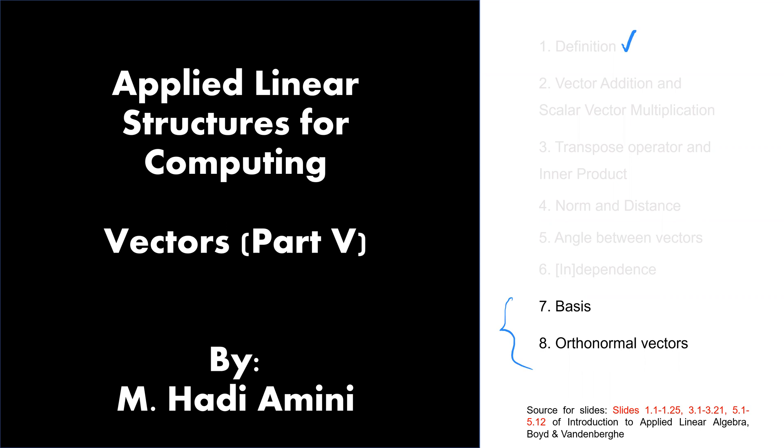Before, we defined the vectors and how we illustrate them. We talked about vector addition, scalar vector multiplication, transpose operator and inner product, norm and distance, specifically the Euclidean norm, the angle between two vectors which we discussed in the previous lecture, and the linear dependence and independence among vectors.